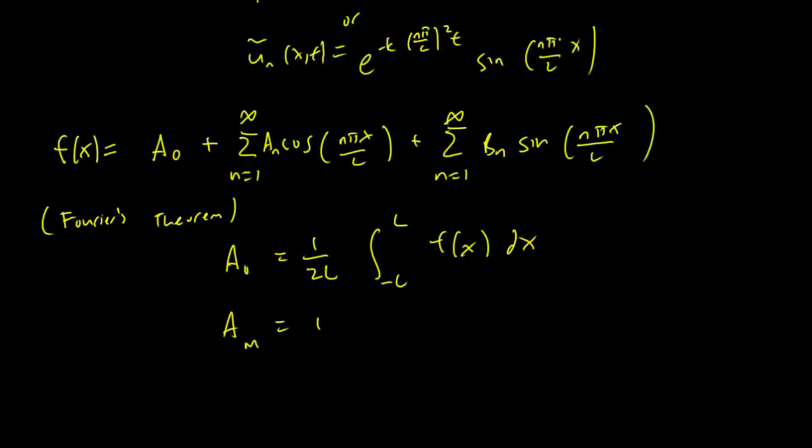But we have A_m equals 1/L. Again, the constant is different, but that's because the rod is longer. And this is going to be f(x) cosine(nπx/L)dx.